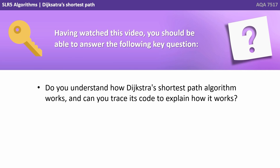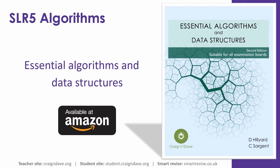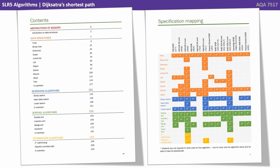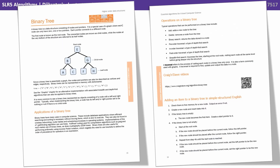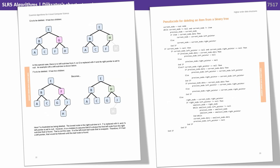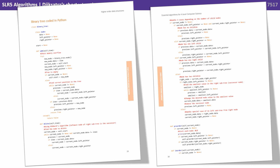Having watched this video, you should be able to answer the following key question: do you understand how Dijkstra's shortest path algorithm works, and can you trace its code to explain how it works? Dave and I know that data structures and algorithms are one of the hardest areas of the course, and we've therefore written a dedicated book available to purchase on Amazon. The book covers all the data structures and algorithms you need to be aware of for the exam, each with its own dedicated chapter covering the data structure or algorithm, applications, operations, links to videos, structured English, a visualisation, pseudocode, and is fully coded in Python, C-sharp, and Visual Basic.